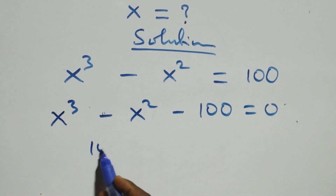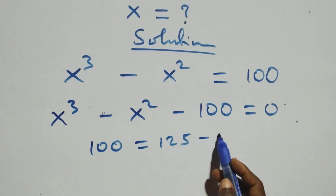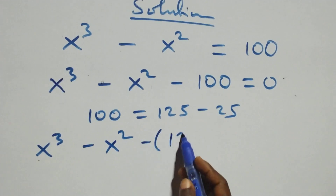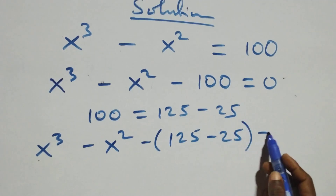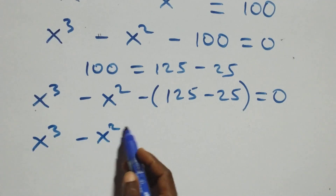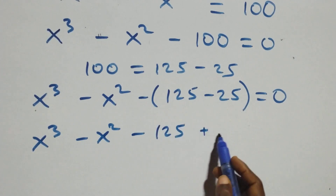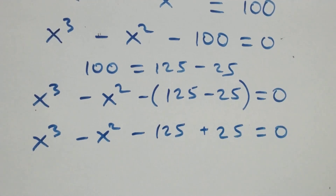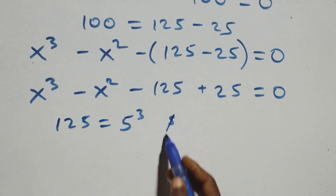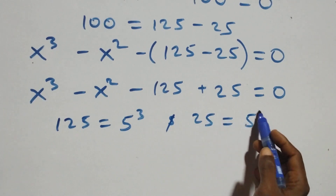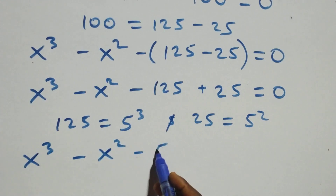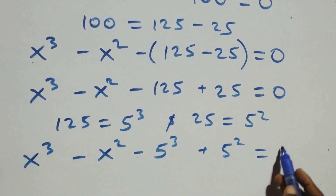The next step: 100 can be expressed as 125 minus 25. So what we have becomes x raised to the power 3 minus x raised to the power 2 minus brackets 125 minus 25 close brackets equals to 0. Opening this bracket: x raised to the power 3 minus x raised to the power 2 minus 125 plus 25 equals to 0. Here we express 125 as 5 times 5 times 5, which is 5 raised to the power 3, so we have x raised to the power 3 minus x raised to the power 2 minus 5 raised to the power 3 plus 5 raised to the power 2 equals to 0.